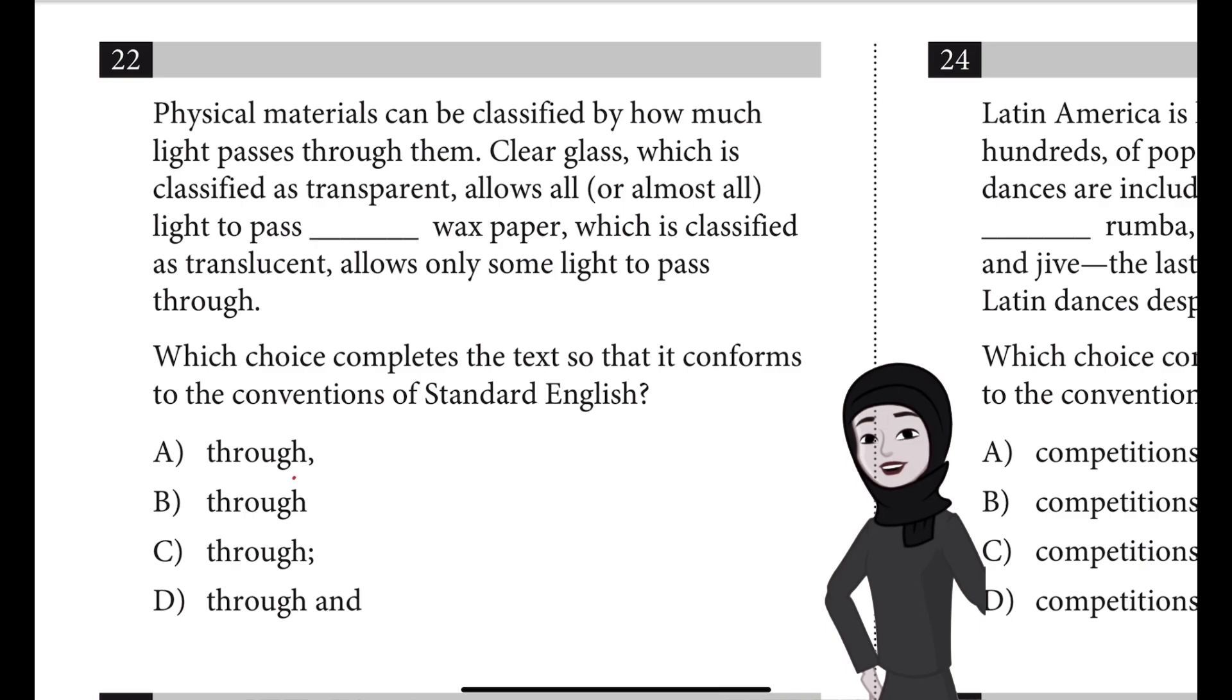Option A has a comma after 'through,' B has no punctuation after 'through,' C has a semicolon, and D has 'through and.'